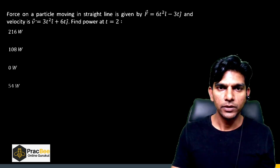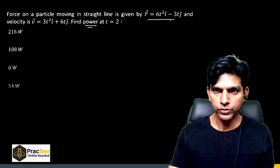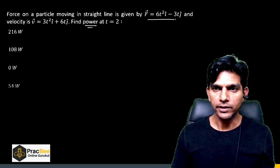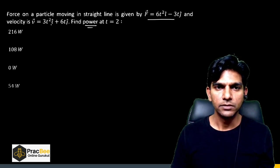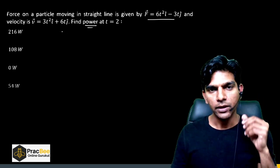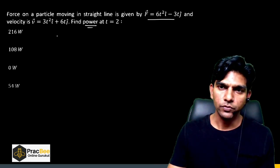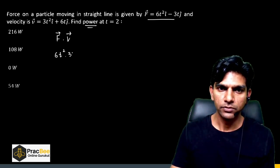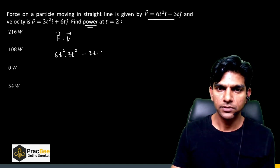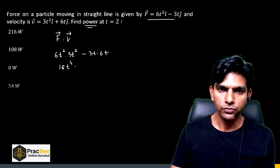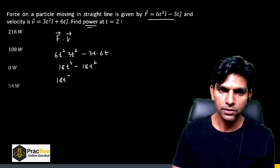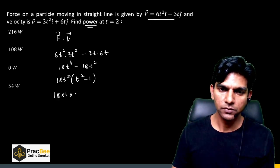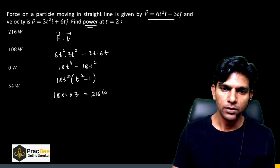The next question is from Work Power Energy. A particle moves in a straight line with force F = 6t²î − 3tĵ and velocity v = 3t²î + 6ĵ. We need power at t = 2 s. Instantaneous power P = F·v = 6t² × 3t² − 3t × 6 = 18t⁴ − 18t² = 18t²(t² − 1). At t = 2: 18 × 4 × 3 = 216 W. Option 1 is the right answer.